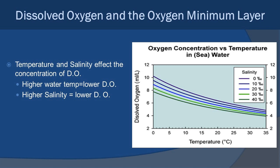This is why in estuaries, when you have a lot of evaporation and it's very hot in the summer, the salinity can get very high and the temperature can get very high, and the dissolved oxygen can get very low.